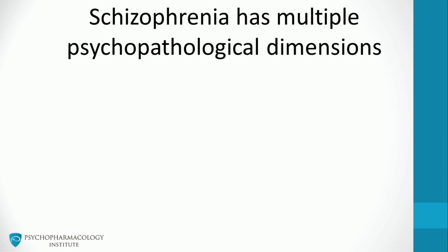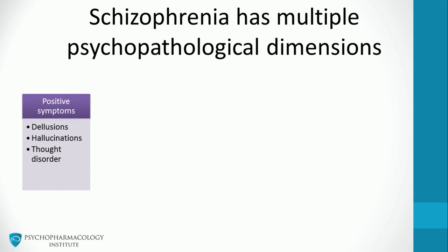Schizophrenia has multiple psychopathological dimensions. There are a number of psychopathological models, but all of them agree that the core symptoms of schizophrenia include positive, negative, and cognitive symptoms. This table reviews some examples in each dimension. Positive symptoms include delusions, hallucinations, and thought disorder, among others.